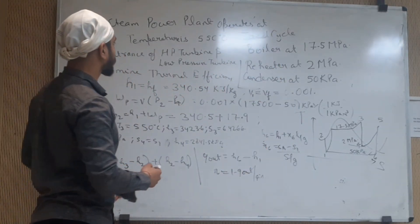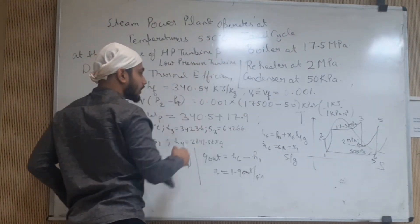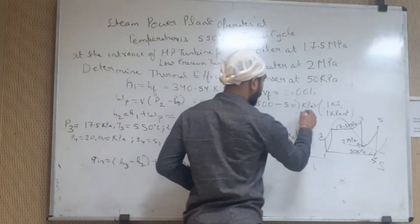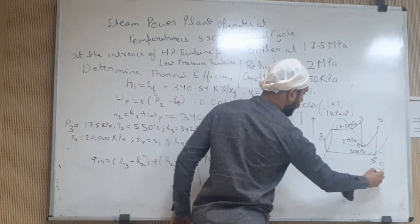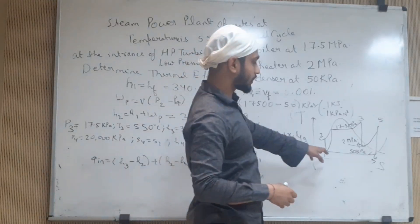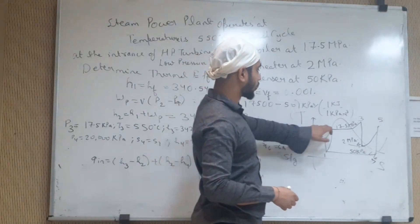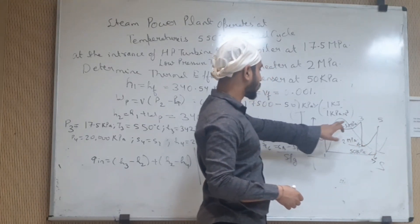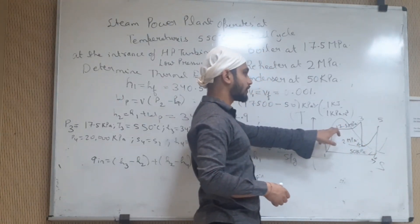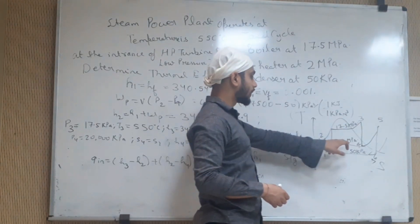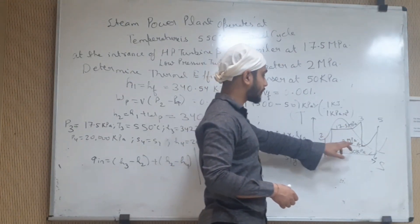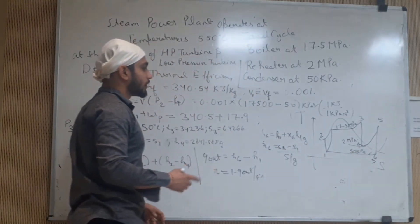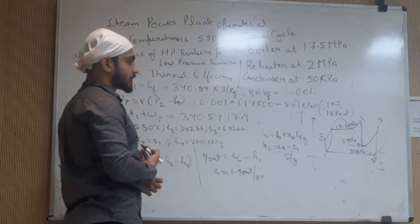The temperature given for the steam power plant is 550 degrees Celsius. A T versus H diagram is given with 6 points: 1 to 2, 2 to 3, 3 to 4, 4 to 5, and 5 to 6. In process 2 to 3, pressure is constant at 15.5 MPa; in process 4 to 5, it is constant at 2 MPa; and from 1 to 6, it is constant at 550 kPa.